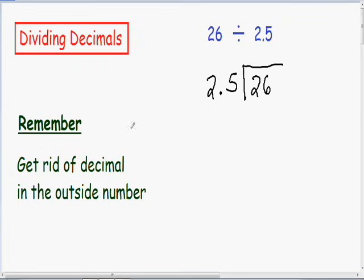And the first thing we need to do, and I wrote this for you in green, we need to get rid of the decimal in the outside number. So we need to get rid of this decimal in this number of 2.5. So I'm going to move the decimal as far to the right as possible. So the only thing you have to do for this particular example is just move it one unit to the right.